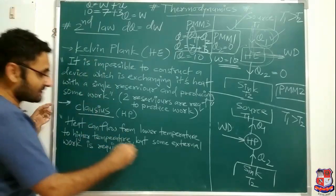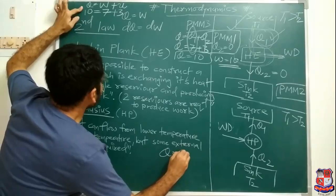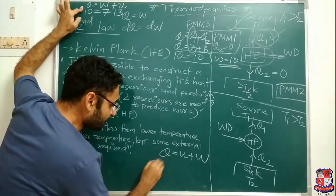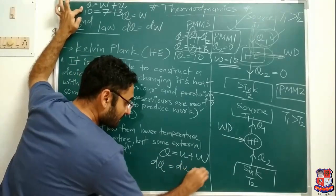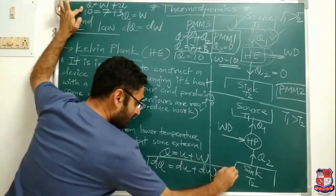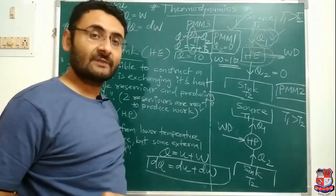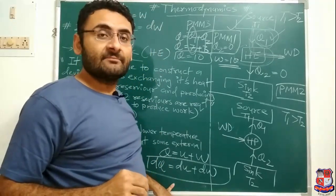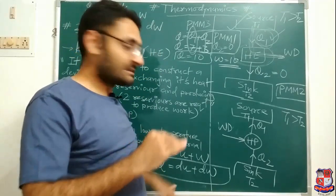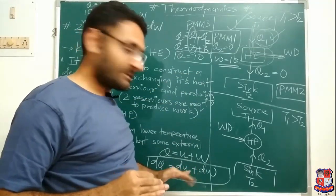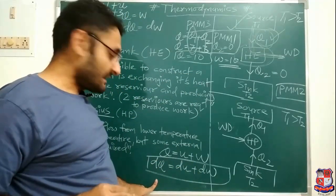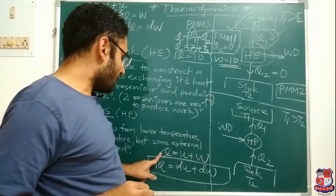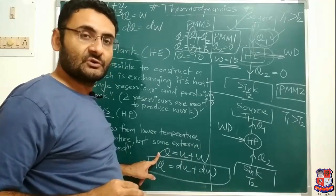So the first law is q = U + w for a single point, and for more than one point we write dq = dU + dw. This equation is very important for the derivation of PV^γ = C. Remember this equation: dq = dU + dw. I hope you understand each and every point about the second law of thermodynamics.